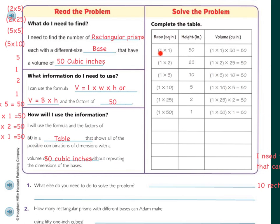So let's do that. We have 1 times 1 with a height of 50 — so 1 times 1 times 50 equals 50. If I make the base 1 times 2 and the height is 25, then 1 times 2 times 25 equals 50. Base 1 times 5 with a height of 10: 1 times 5 times 10 is 50. Base 1 times 10 times 5 is 50. Base 1 times 25 with a height of 2 is 50. Base 1 times 50 with a height of 1 equals 50.